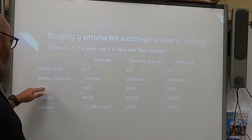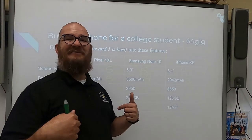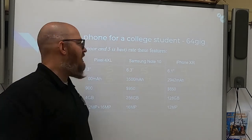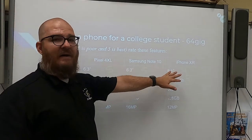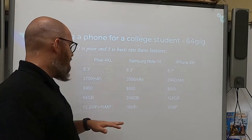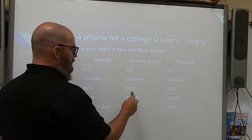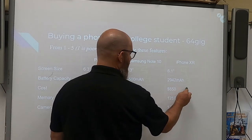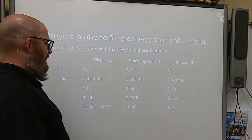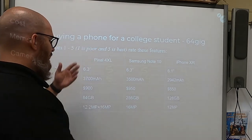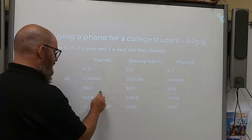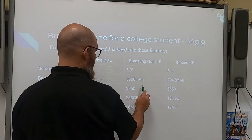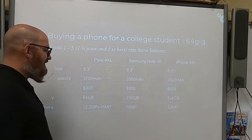Cost is what is known as inversely proportional. So the higher the cost, the lower the rating, whereas the higher the other numbers are, the higher the rating — those are proportional. Cost is going to be backwards. So starting with $650, that's certainly going to be a five. $900 is way up there; we're going to give that about a three. And $950 — we'll make that a two because that's the most expensive phone.